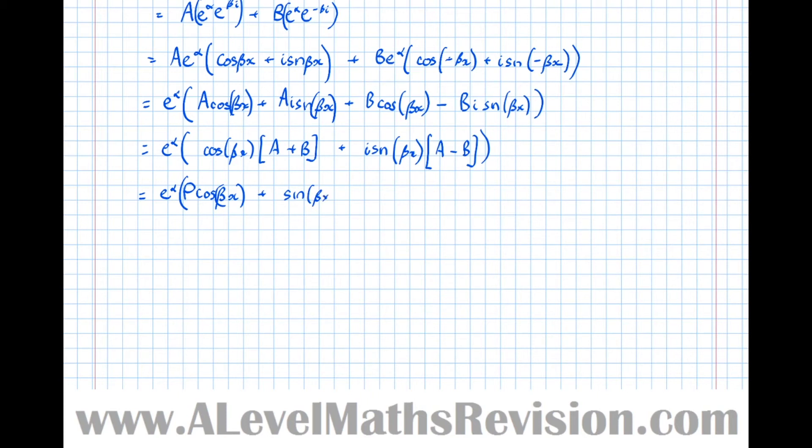And what we're going to do now, we're going to take this i into the constant bracket there. So it becomes sin(βx) (Ai - Bi) equals e^(αx) (P cos(βx) + Q sin(βx)), where Ai - Bi is going to be Q.